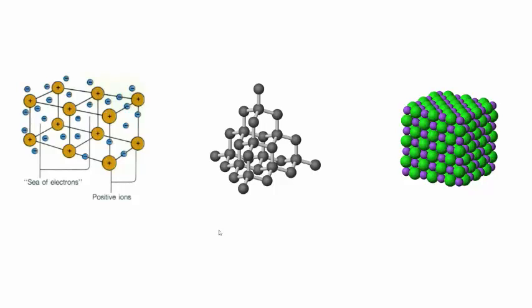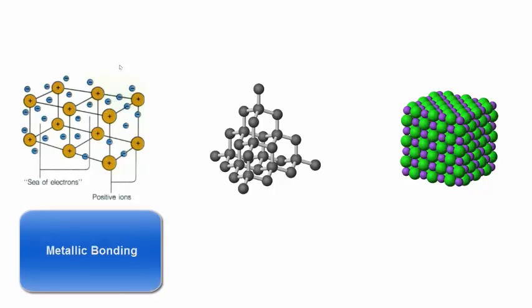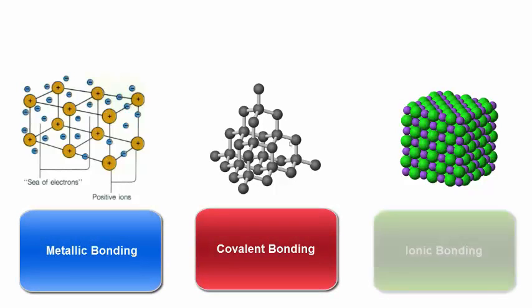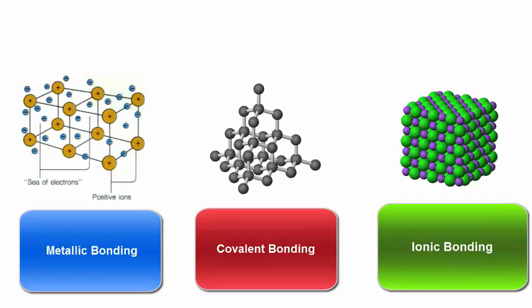If you've studied some chemistry, you might know that there are three ways that solids can be bonded together: metallic, covalent, and ionic.